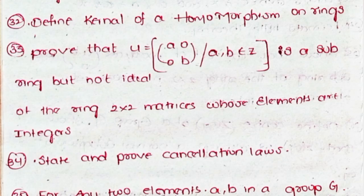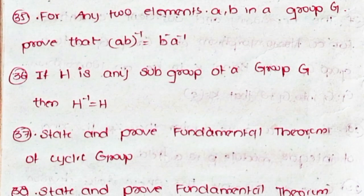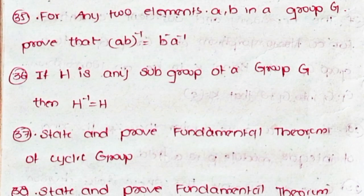Thirty-four, state and prove the cancellation laws. Thirty-five, for any two elements a, b in a group G, prove that (ab)⁻¹ = b⁻¹a⁻¹. Thirty-six, if H is any subgroup of a group G, then H⁻¹ = H.